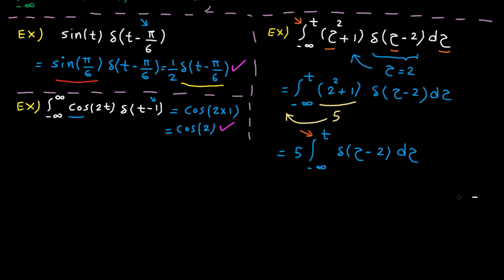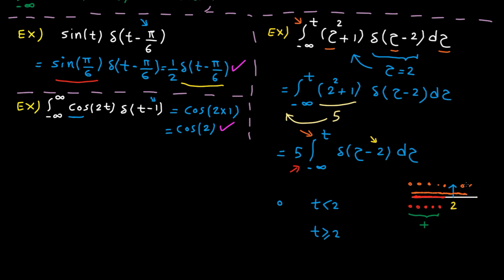Now I'm going to use the sifting property. The integral ends at t. Let's plot our delta function: the signal is non-zero only at τ equal to 2. The integral is from minus infinity to t. When t is less than 2, the signal is 0 everywhere, so the summation of lots of zeros is still 0. When t is equal to or greater than 2, the signal is 0 everywhere except at one point, so the summation is 1. Plotting this: when t is less than 2 the signal is 0, and when it's greater than 2 the signal is 1. So this function is basically a unit step shifted by 2. Done.